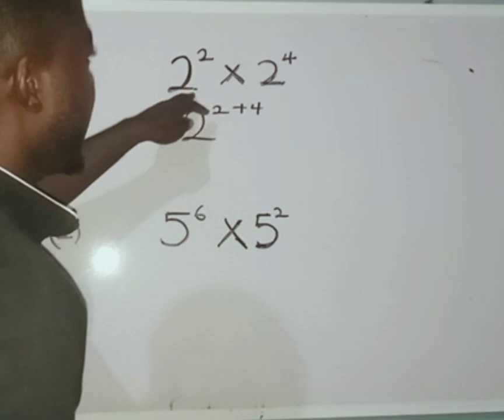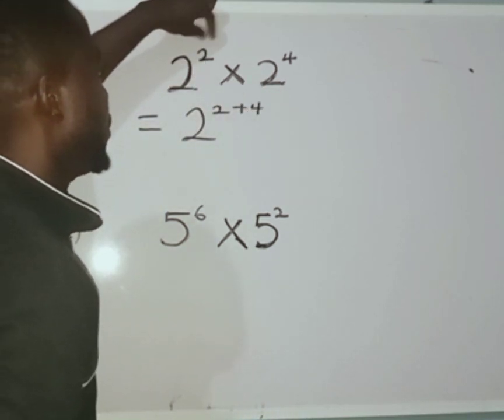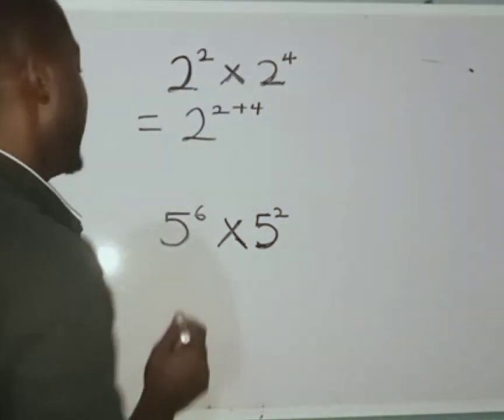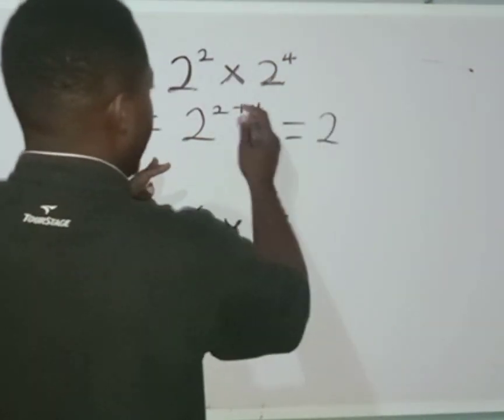So if you have to multiply numbers with the same base, what you have to do is just to add their powers according to law of indices. So I'm going to have 2 raised to power 2 plus 4, I'm going to have 6.